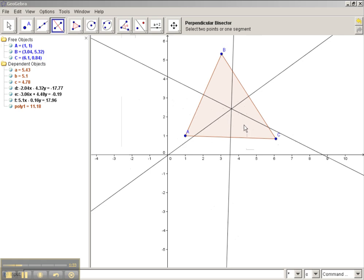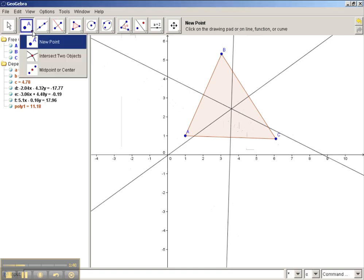So this intersection point is the concurrency point of our three perpendicular bisectors. And we want to mark that intersection point. In order to do that, we want to go up on our toolbar over here. You see this point A. And again, we want to select on that red arrow on the bottom.